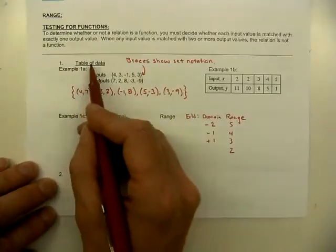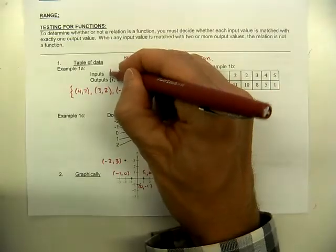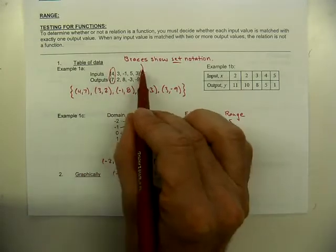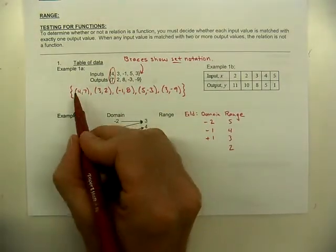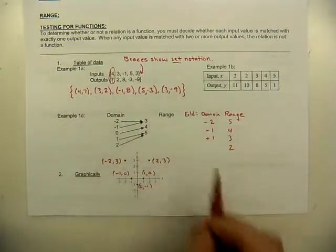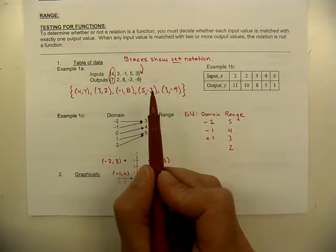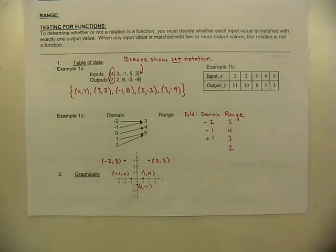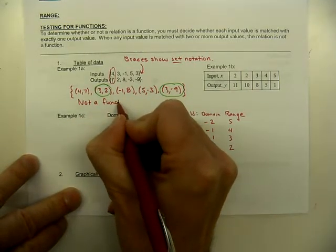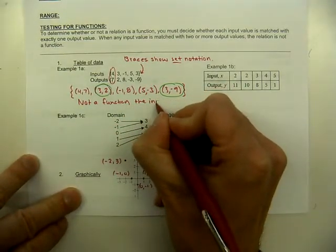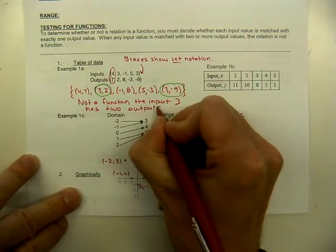There are different ways to represent this. Here we have a table of data using set notation — braces showing collections of numbers. These are all the inputs, these are all the outputs. We have ordered pairs: (4,7), (3,2), (-1,8), (5,-3), and (3,-9). Does that show a function? No, it doesn't. This is not a function because the input of 3 has two outputs — meaning it has two answers: 2 and -9. We don't want two different answers.